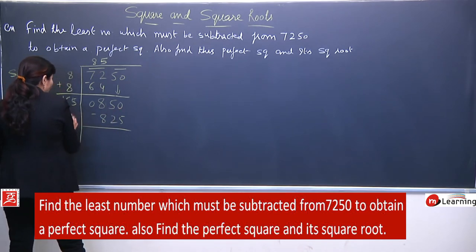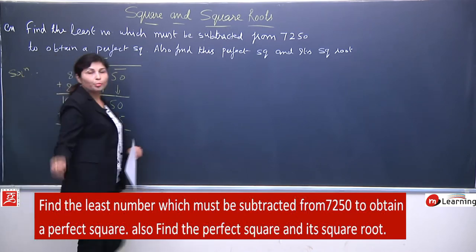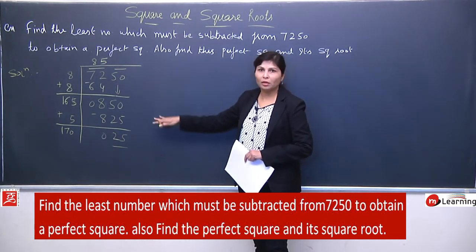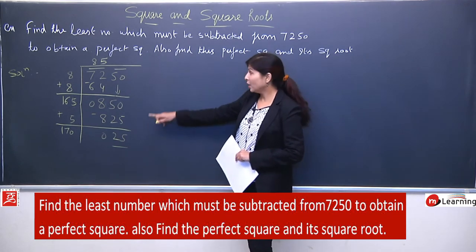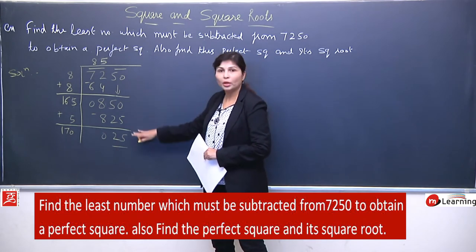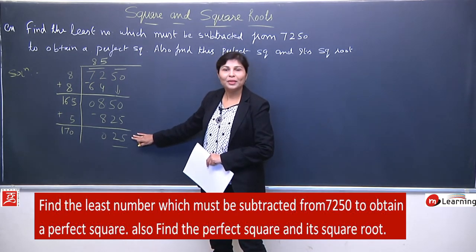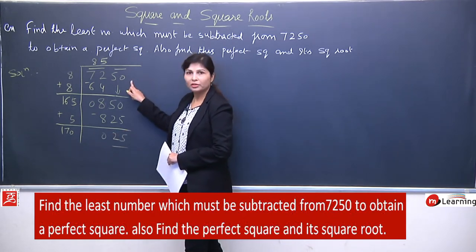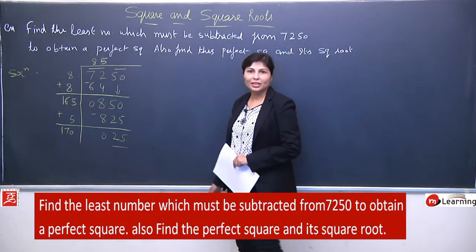165 ka rule hai — jo number yahan lenge wahi yahan bhi lena hai. So 165 × 5 = 825. Agar 166 lete toh bada aata. Wahi 5 add kar denge toh 170 ho jayega. Jab subtract karenge, remainder bachta hai — matlab yeh perfect square nahi hai. Perfect square hota toh remainder 0 aata. Square root 85 nahi nikla, toh 25 extra hai — this is the required least number.